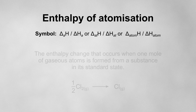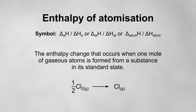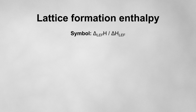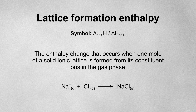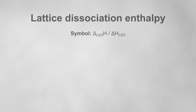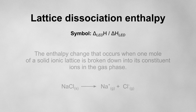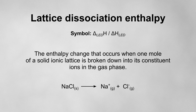The enthalpy of atomization is the enthalpy change that occurs when one mole of gaseous atoms is formed from a substance in its standard state. The lattice formation enthalpy is the enthalpy change that occurs when one mole of a solid ionic lattice is formed from its constituent ions in the gas phase. The lattice dissociation enthalpy is the enthalpy change that occurs when one mole of a solid ionic lattice is broken down into its constituent ions in the gas phase.